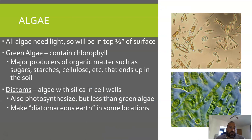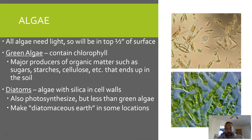The other topic in part one is algae. All algae need light, so they'll be found in the top half inch of the soil surface. Green algae are green because they contain chlorophyll and are major producers of organic matter — sugars, starch, and cellulose — that end up in the soil. They give sugars produced from photosynthesis to the soil in exchange for nutrients and water.